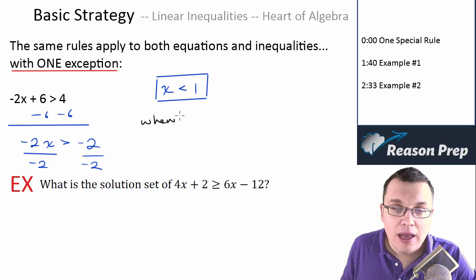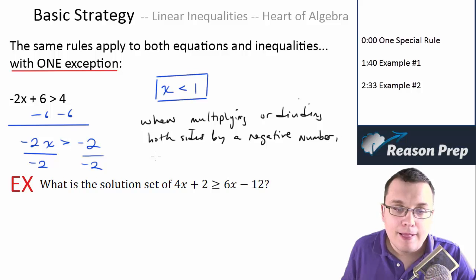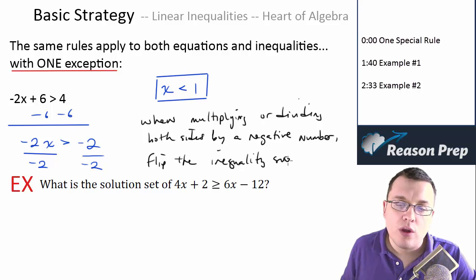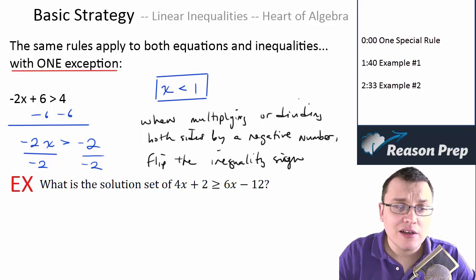So the general rule, I'll write this down, when you're multiplying or dividing both sides by a negative number, this only applies to negative numbers, flip the sign. Flip the inequality sign. So that's your one special rule. But otherwise, everything else basically that applies to equations applies here.